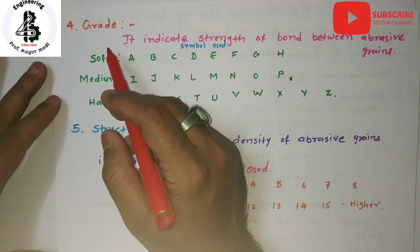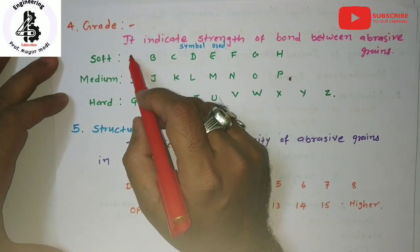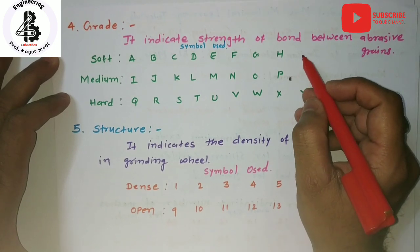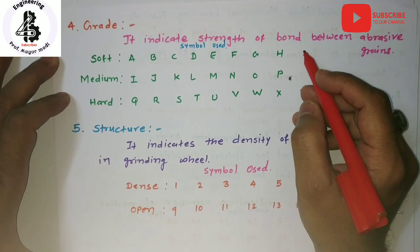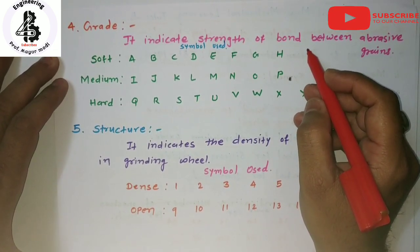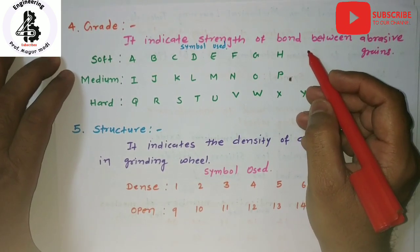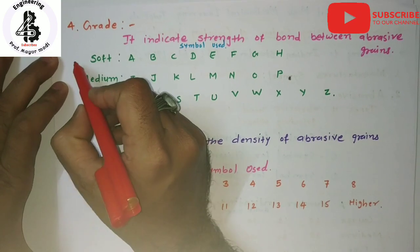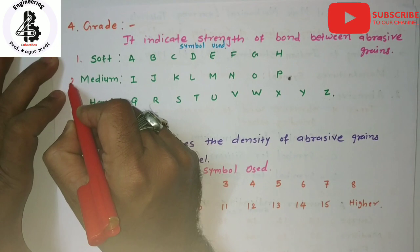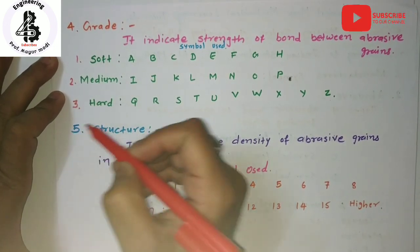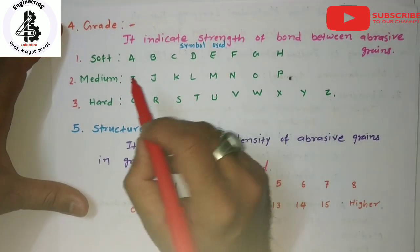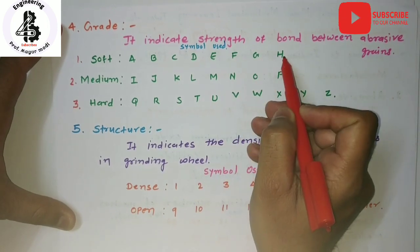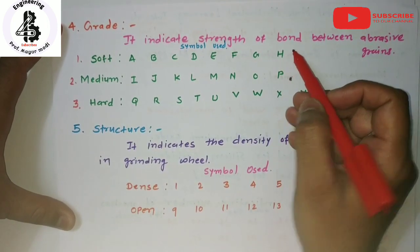The fourth category is grade, which indicates the strength of the bonds between the abrasive grains — the characteristics or strength of the binder used to make a grinding wheel. There are three different grade categories. The first category is soft bond, indicated by letters A, B, C, D, E, F, G, and H — so A to H indicates soft kind of binders used for making grinding wheels.